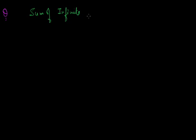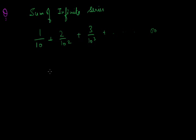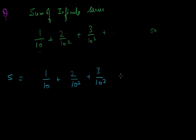Let's take one more interesting problem. Find the sum of the infinite series: 1/10 + 2/10² + 3/10³ and so on. This series is interesting because it has no single pattern — it is neither purely AP nor purely GP. The denominator (10, 10², 10³) forms a GP while the numerator (1, 2, 3) forms an AP.